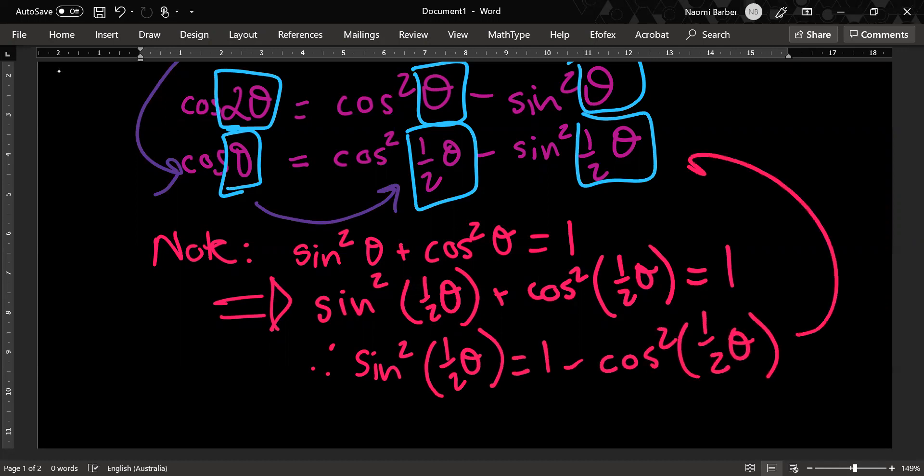Now, this enables me to get rid of that sine squared half theta, and I can rewrite cos theta in terms of cos squared half theta only, and that's really going to help my equation.